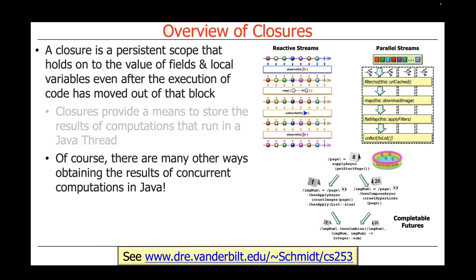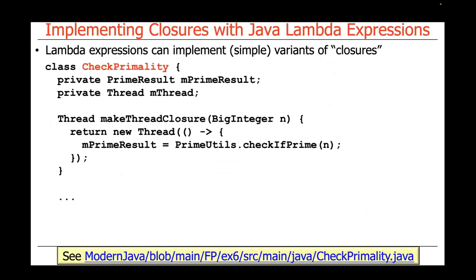You can find videos and slides that talk about these ways — such as Java parallel streams, Java completable futures, reactive streams, and so on — in the link at the bottom of the slide. Lambda expressions in Java can be used to implement some simple variants of the concept of closure, and this particular example is available in this file — the CheckPrimality class — which we'll use in ways that will become apparent very shortly.